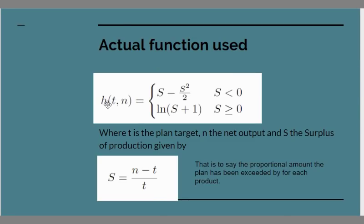Mathematically I use a function of the form s minus s squared upon 2 if the scale of production is below the plan target and log of the scale plus 1 if it's above the plan target. Where s is either the surplus or the scale of production and it's given by the net output minus the target over the target. And that is to say it's the proportional amount by which the plan has been exceeded by each industry.